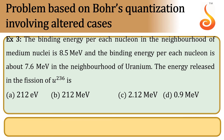Example 3. The binding energy for each nucleon in the neighborhood of medium nuclei is 8.5 mega electron volt, and the binding energy for each nucleon is 7.6 mega electron volt in the neighborhood of uranium. The energy released in the fission of uranium-236 is?